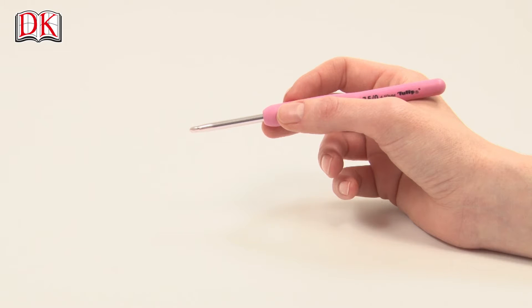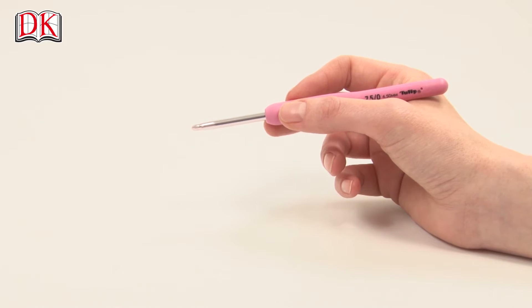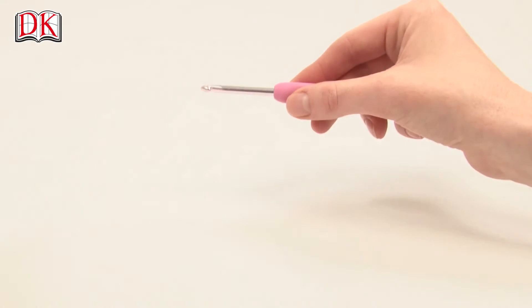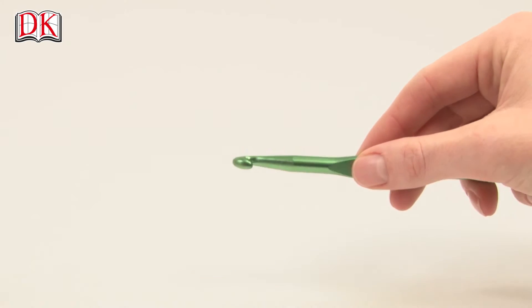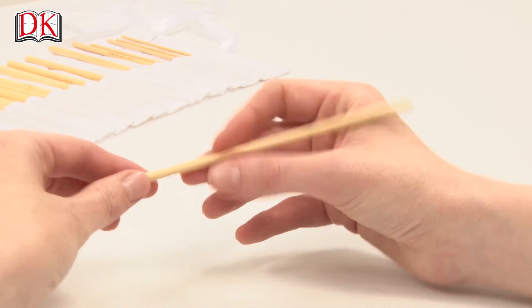Hold the hook in your right hand and tension the yarn with your left. There are two technically correct ways to hold the hook: like a pen or like a knife. But the most important thing to remember is that holding the hook must be comfortable. The individual way you hold the hook will develop as you practice.